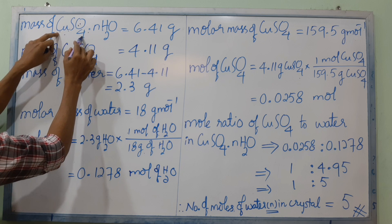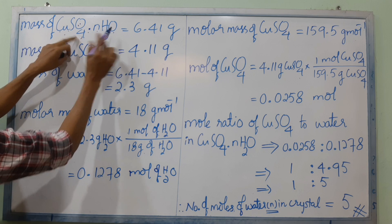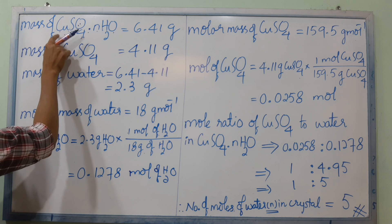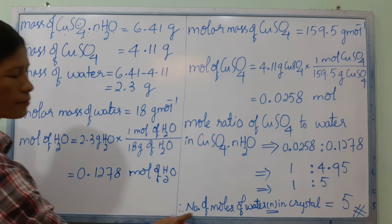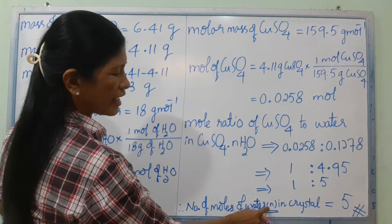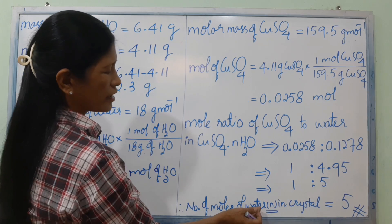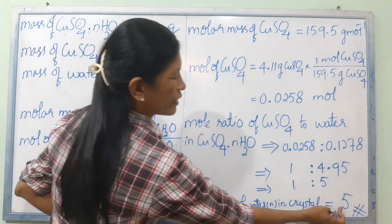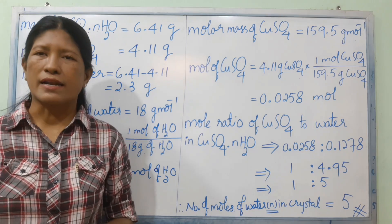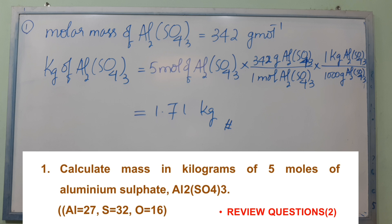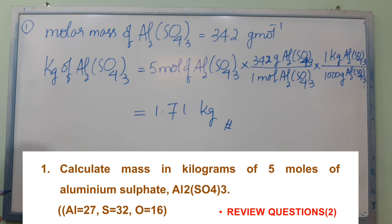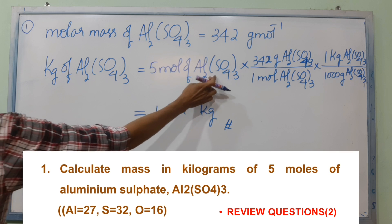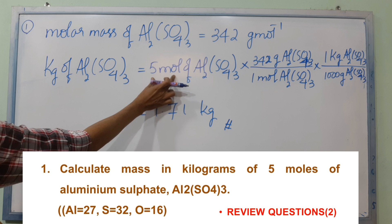The result confirms the formula is CuSO4·5H2O — copper sulfate pentahydrate. For review question number one: aluminium sulfate Al2(SO4)3 with n water molecules in the crystal. Find the number of water molecules n in the formula Al2(SO4)3·nH2O.